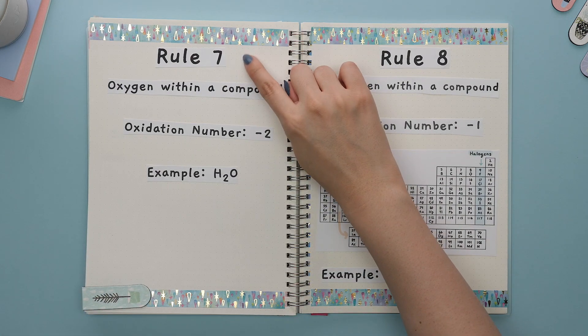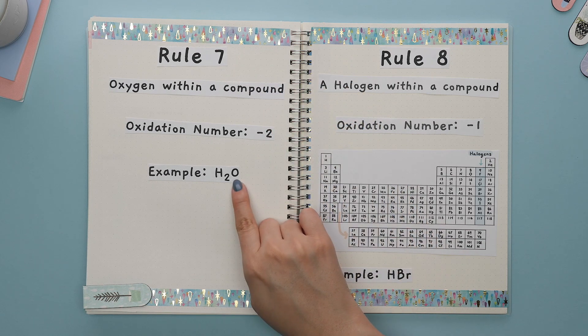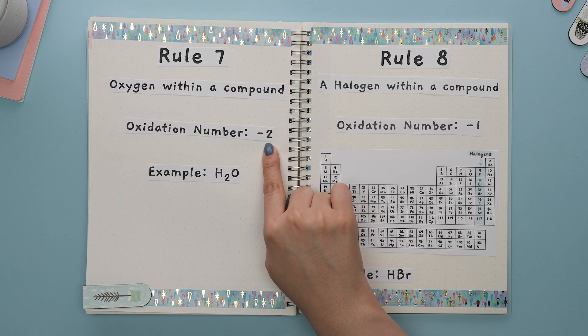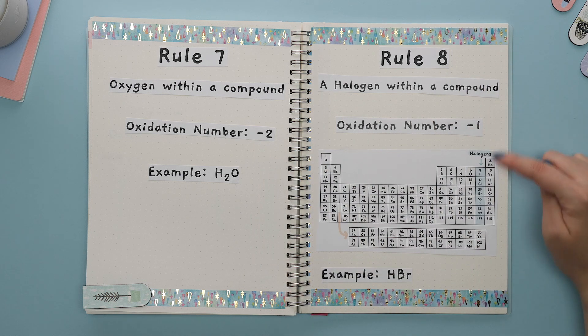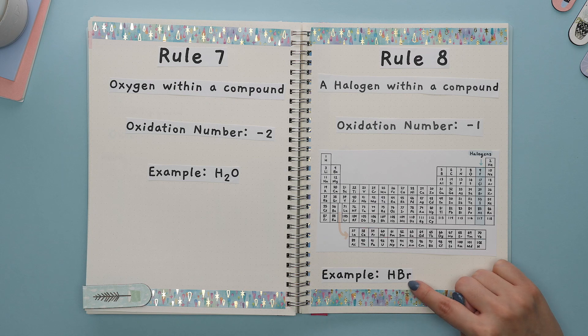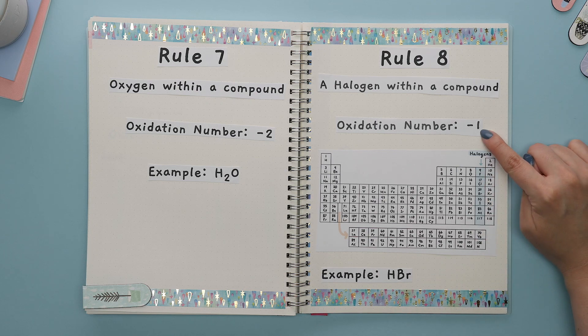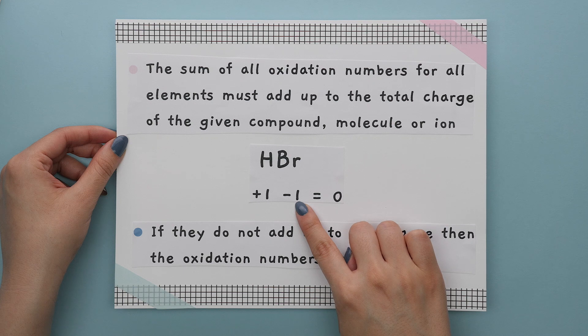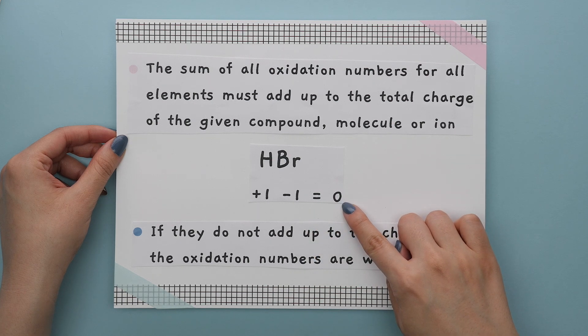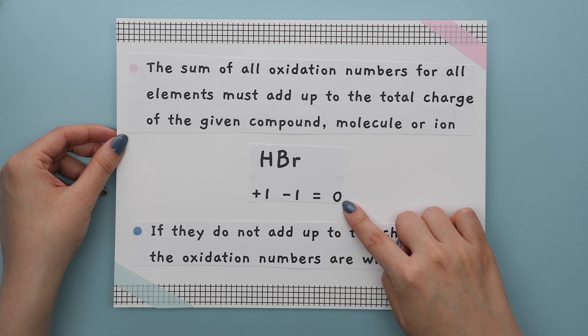Rule seven is: whenever oxygen is within a compound, the oxidation number of oxygen is negative two. Rule eight is: whenever a halogen is within a compound, the oxidation number of the halogen is negative one. Besides these rules, there is one more major thing to know: the sum of all oxidation numbers for all elements must add up to the total charge of the given compound, molecule, or ion.